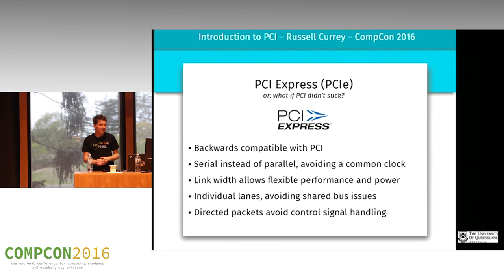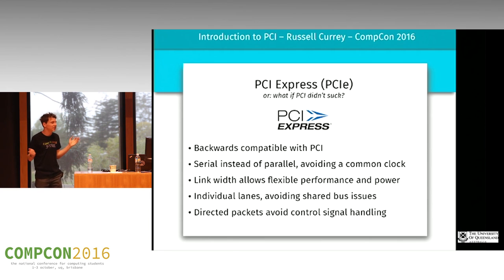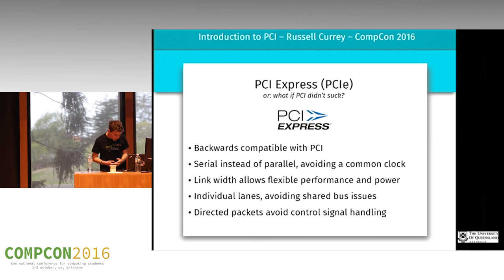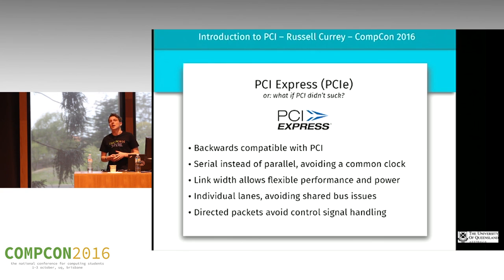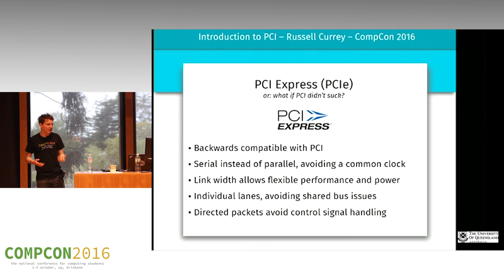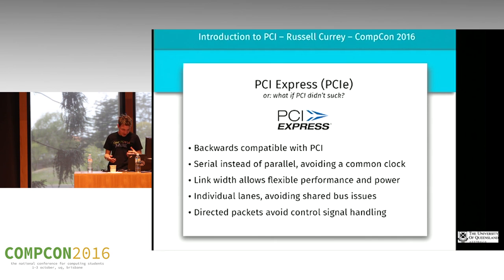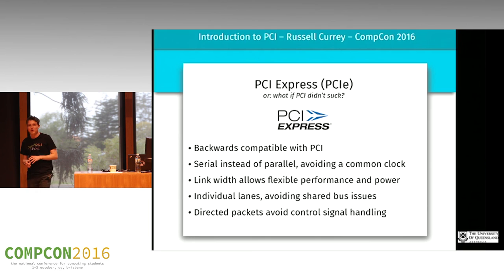Until PCI Express. PCI Express came out and solved a bunch of problems. I like to think of PCI Express as just: what if PCI didn't suck? It was backwards compatible, which is a very big deal if you want to get market share. It was a serial instead of a parallel bus — which basically solved a lot more problems than it created. One of the problems was that traditional PCI had a common clock so timings could be thrown off when multiple devices are doing things. PCI Express is no longer a shared bus, which is terrific.